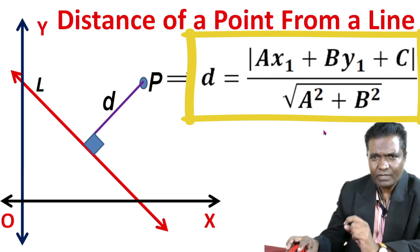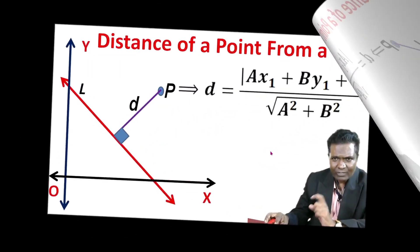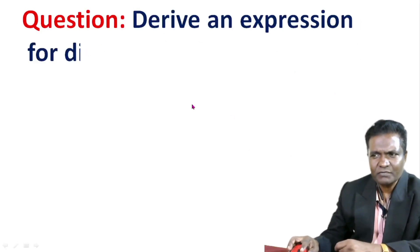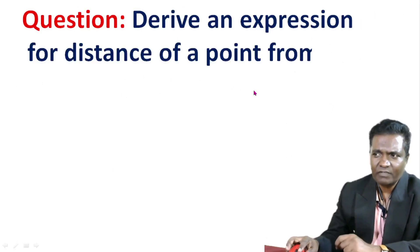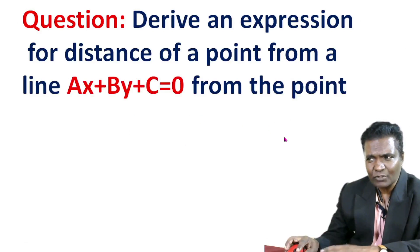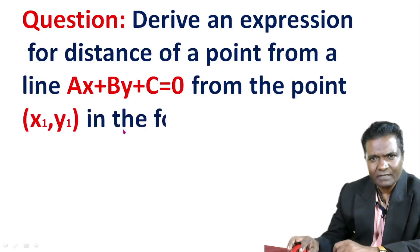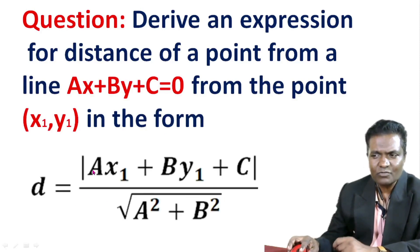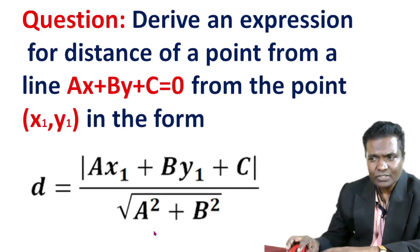This is how you derive the expression for distance of a point from a line: ax plus by plus c equal to 0, from the point x1, y1. The formula is D equal to mod of ax1 plus by1 plus c, divided by root of a squared plus b squared.